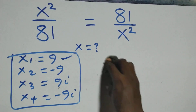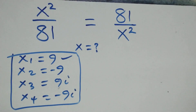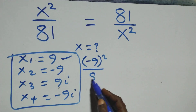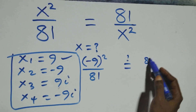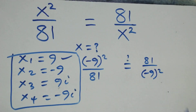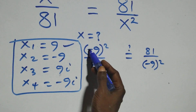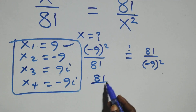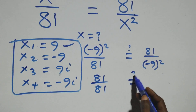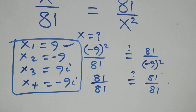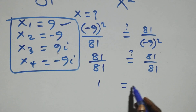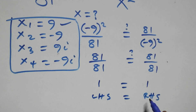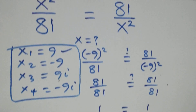For x = −9: (−9)² over 81 = 81 over 81. The square removes the negative sign, giving plus 81 over 81 = 1, which equals 81 over 81 = 1. Left-hand side equals right-hand side, so x = −9 also satisfies the given problem.